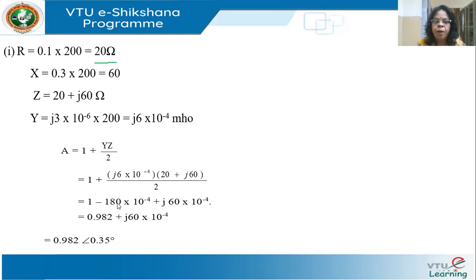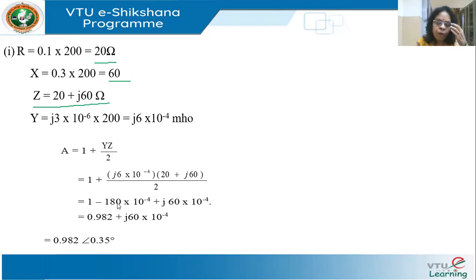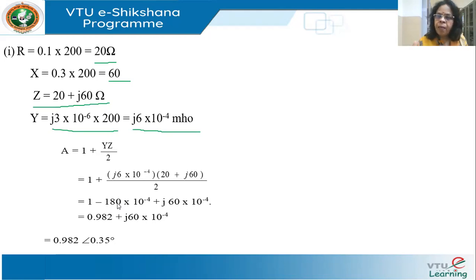R = 0.1 × 200 = 20 Ω. X = 0.3 × 200 = 60 Ω. Therefore Z = 20 + j60 Ω. Y = j3×10⁻⁶ × 200 = j6×10⁻⁴ mho. Be careful to use complex numbers throughout — A, B, C, D are all complex numbers. Students often make the mistake of using magnitudes only. In the T model: R/2 = 10 Ω, X/2 = 30 Ω on each side, and admittance Y at the center.